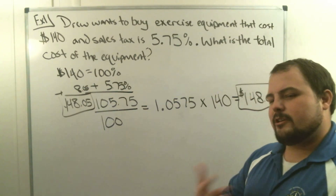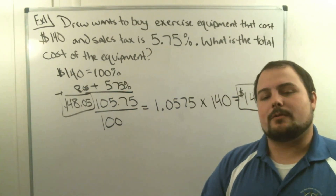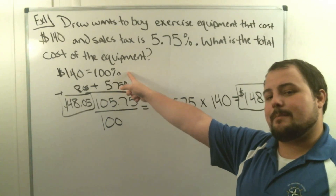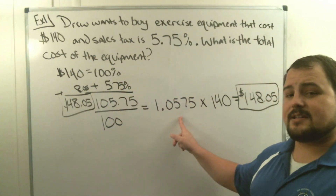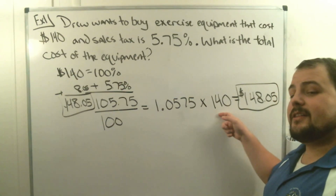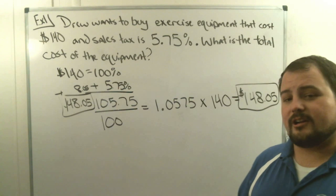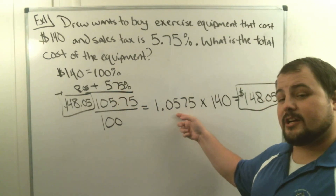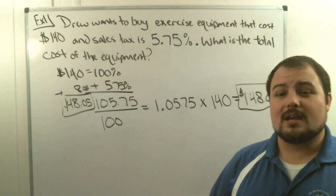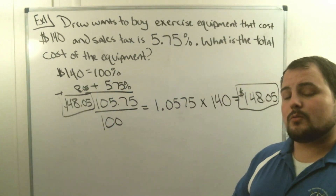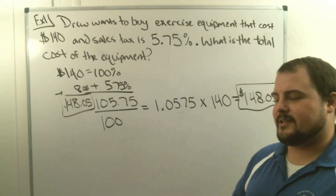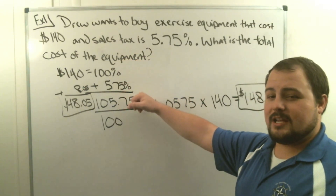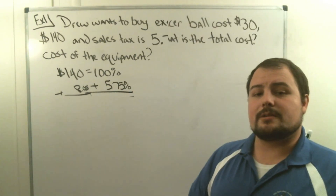So to summarize: if we have a tip or tax, all we do is add that percent to 100%. We take that combined percent, divide it by 100 to change it to a decimal, multiply it by the original price, and that gives us our new total price. We're going to solve another problem similarly — figure out 100% of the price, add the tax, take that decimal, and multiply it by our total to get the new amount.